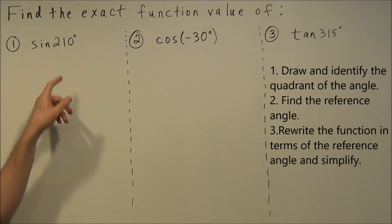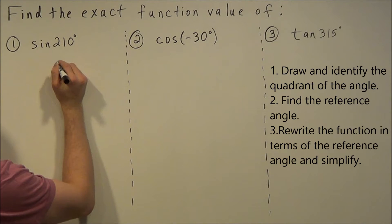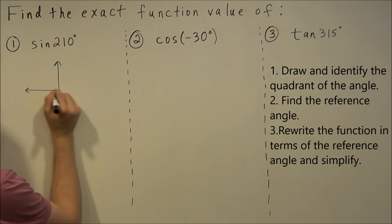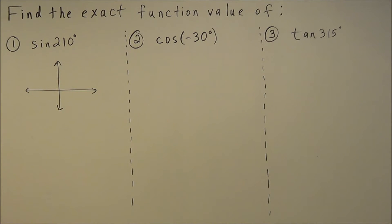The first thing we could do to find the value of sine of 210 degrees is draw this out. We should note that 210 degrees starts from standard position and goes into quadrant three.